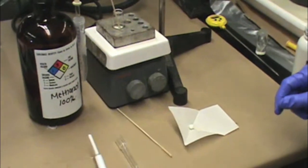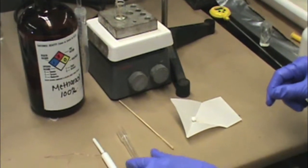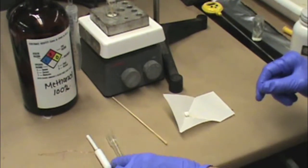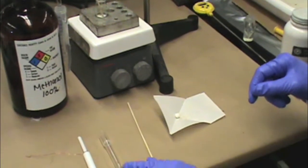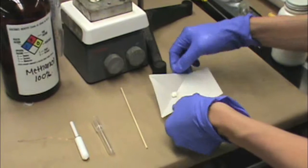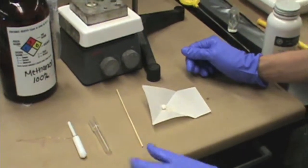You will also need your Kreg tube insert with copper wire, your Kreg tube, another boiling stick, and the solid that you will be recrystallizing.